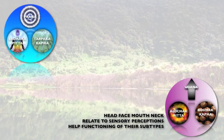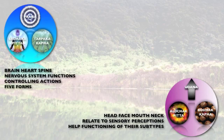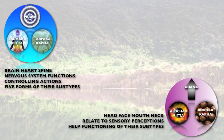Pranavayu, Sadak Pitta, and Tarpak Kapha relate to the brain, heart, spine, and nervous system function and have a controlling action on the other of the five forms of their respective dosha. Prana is increased by the practice of Pranayama and by the creation of a positive attitude and positive will in life.